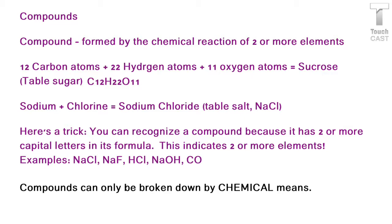So let's review. We have an element, which is the simplest form of a substance that contains only one type of atom. A molecule, which is the simplest form of a substance that contains two or more atoms — and these atoms can be from the same element or from different elements. And compounds, which are formed by two or more elements that have chemically reacted.